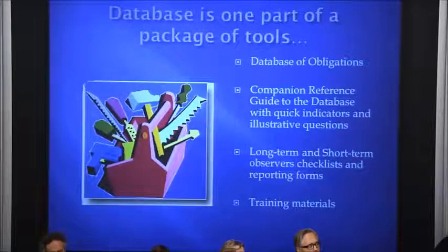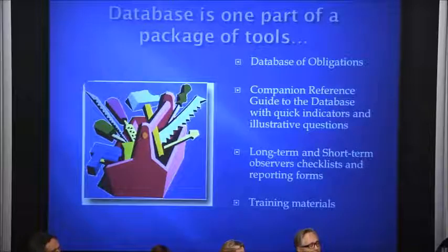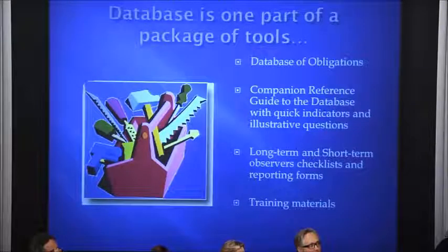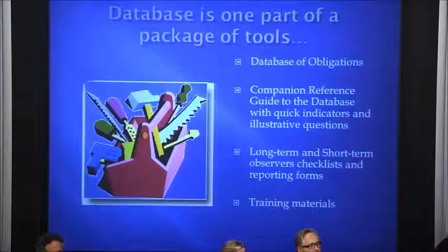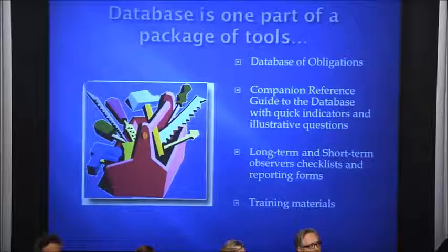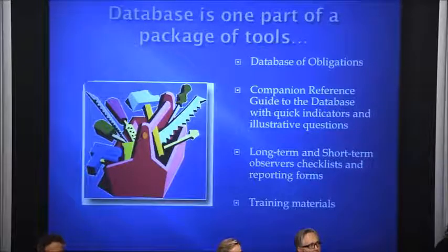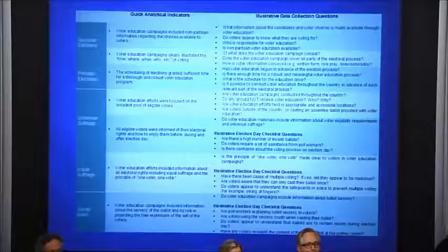A quick reminder on our observation methodology: we have two kinds of observation deployed at the Carter Center. Long-term observers are deployed around the country, sometimes for several months in advance of the election, and gather qualitative data submitted in narrative reports. Short-term observers are deployed for a much shorter period right around election day; they complete observer forms and submit quantitative data. We combine those together as an observation mission to release our findings — generally within about 48 hours of the election.